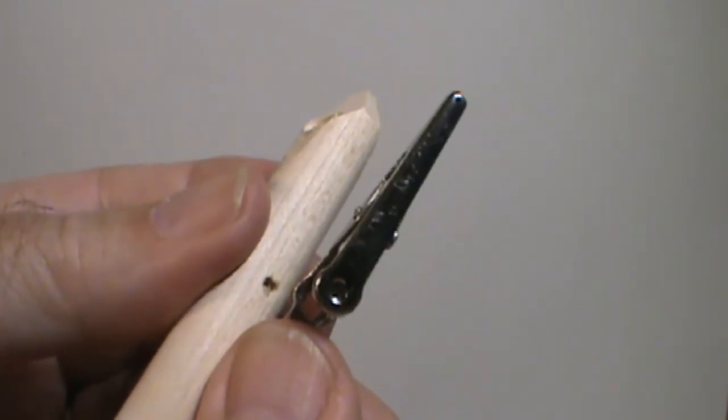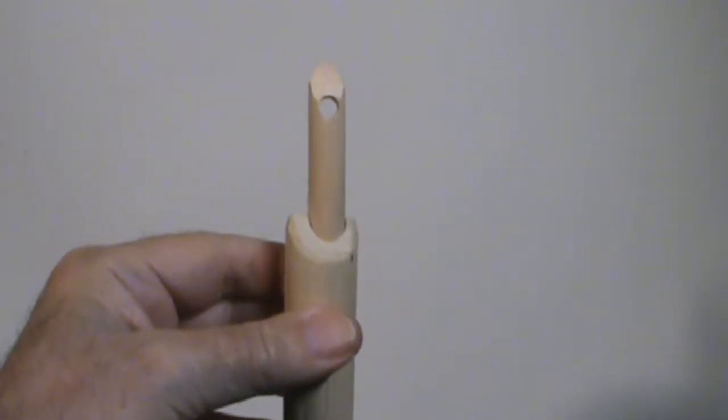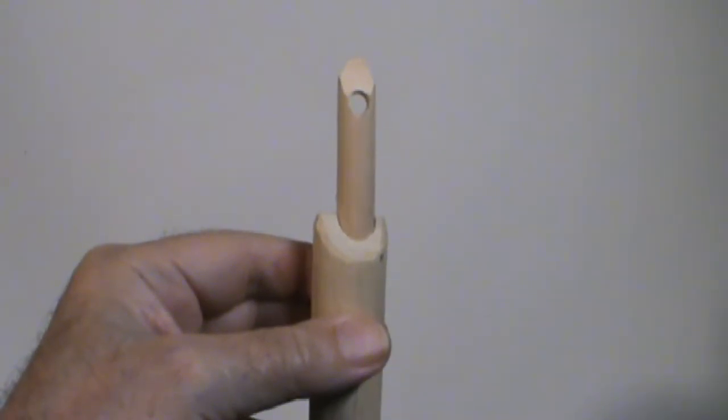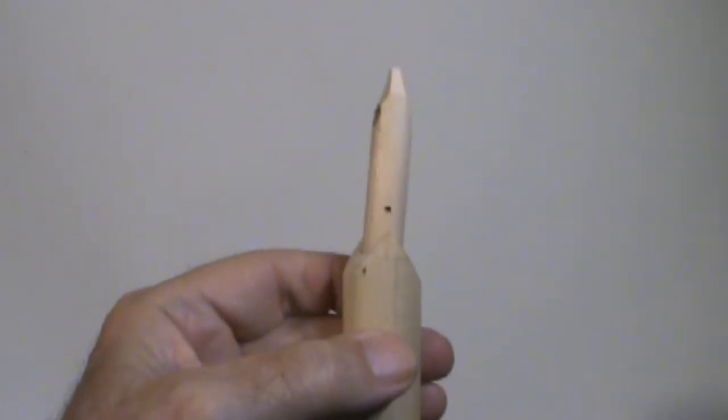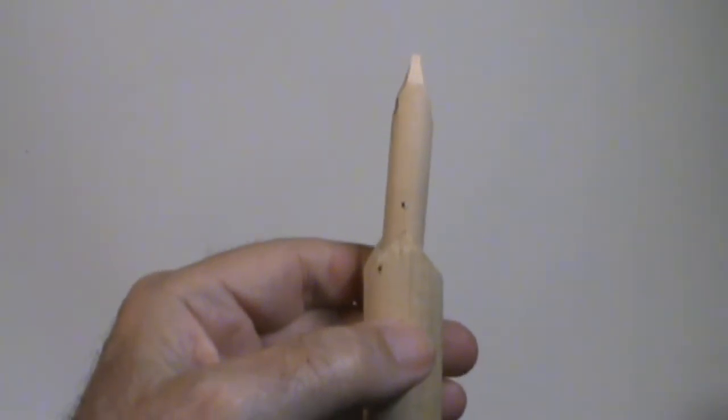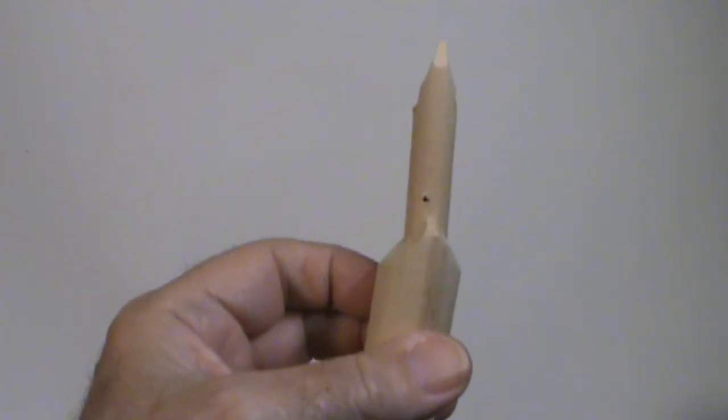Press the dowel, the half-inch dowel, into the one-inch dowel and align the tapers on the end to be the same on both sides like this.